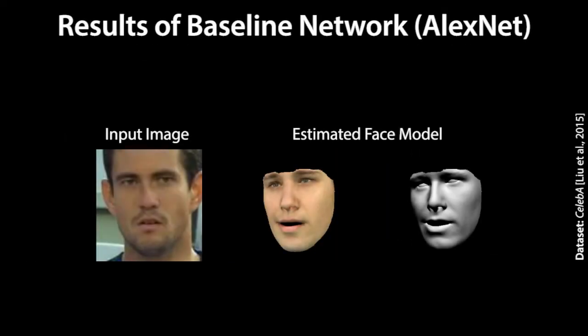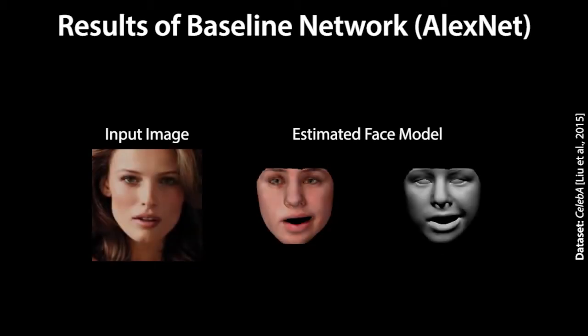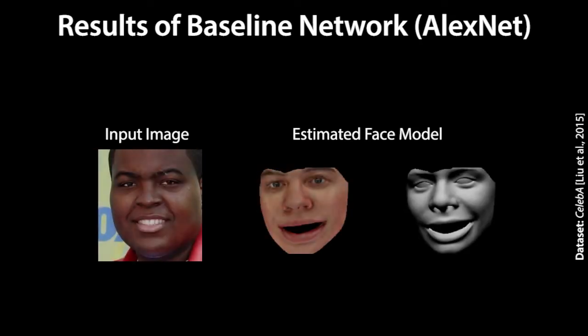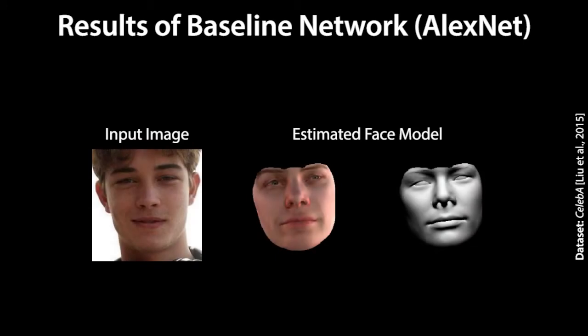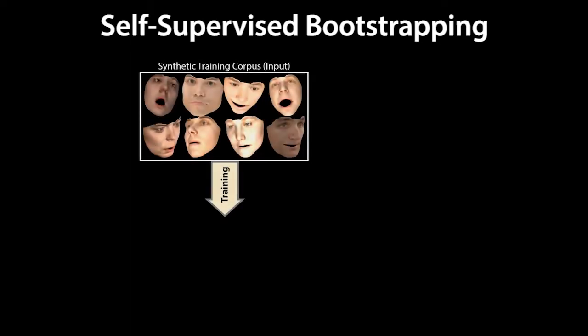Here we show results of a baseline network which has been trained using a purely synthetic training corpus. The reconstruction quality of this network is severely limited. We improve on the baseline approach with a novel self-supervised bootstrapping strategy that adjusts the training corpus to better match the real-world distribution of phase images.